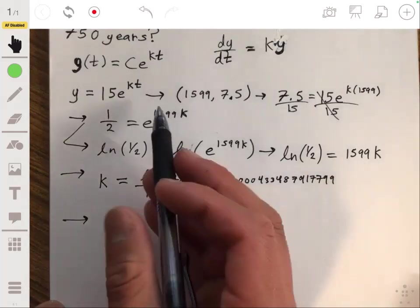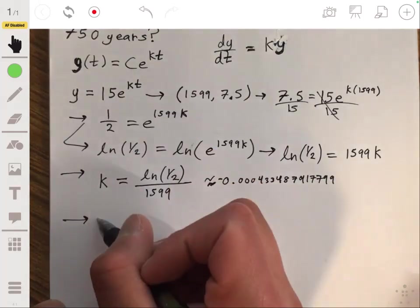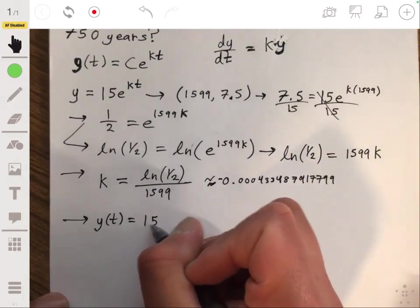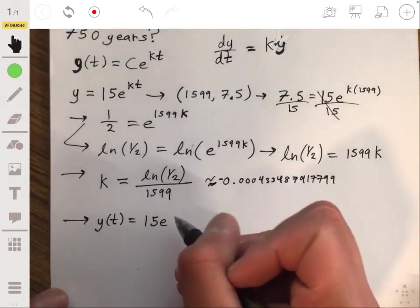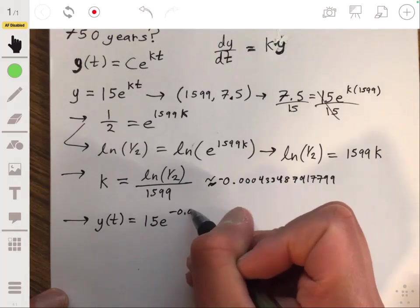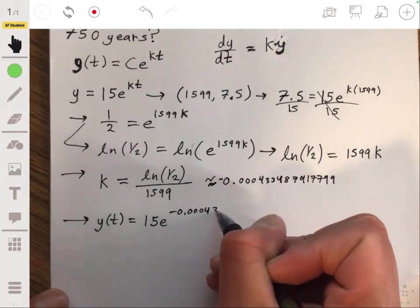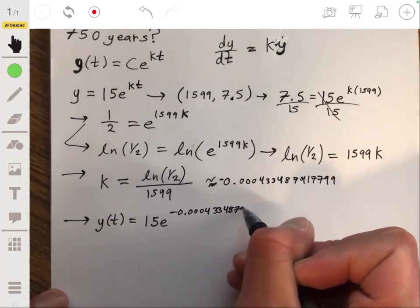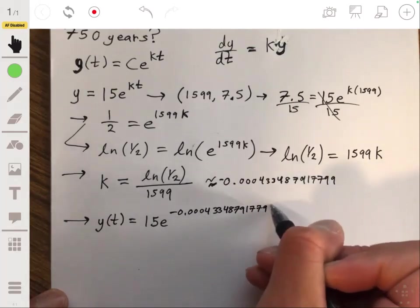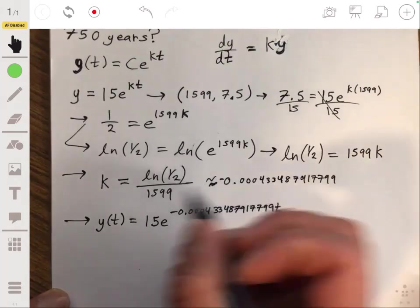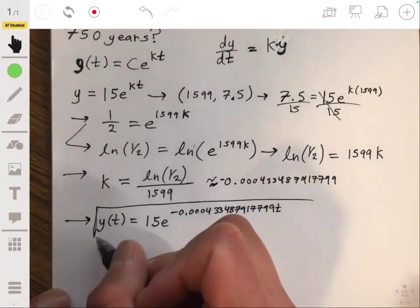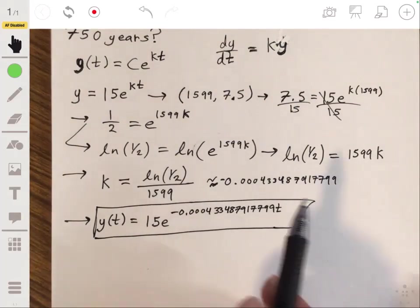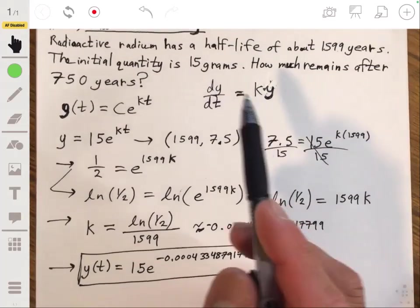So we're going to write our equation for y of t as 15e to negative 0.000433587917799t. Okay, so now we can solve the problem.